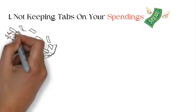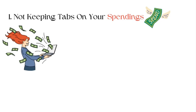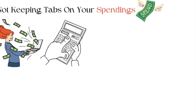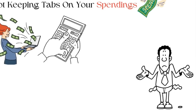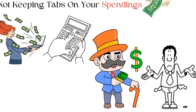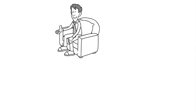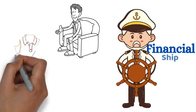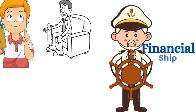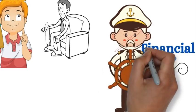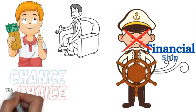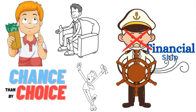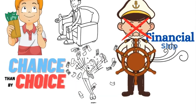1. Not keeping tabs on your spendings. Picture this. Whether you're raking in the big bucks or giving the piggy bank a light workout, here's the scoop. If you're not playing detective with your spending, those hard-earned dollars might just slip through your fingers like sand at the beach. Consider this as a pivotal reality check. Picture your income as the captain of your financial ship. But here's the catch. Without a vigilant eye on where each dollar is distributed, you're essentially allowing the wind to steer your ship. In other words, your financial course is determined more by chance than by choice. And one of the ways in which you waste money is when you don't keep tabs on your spending.